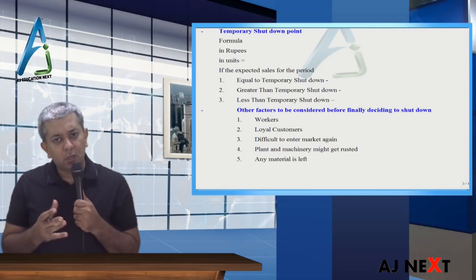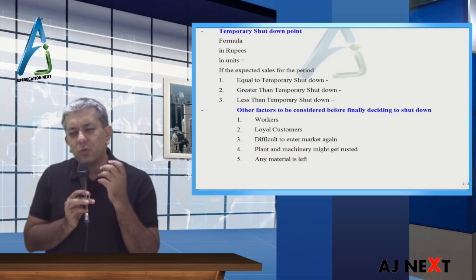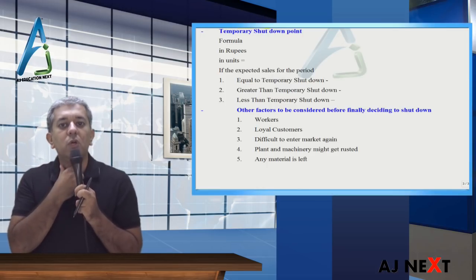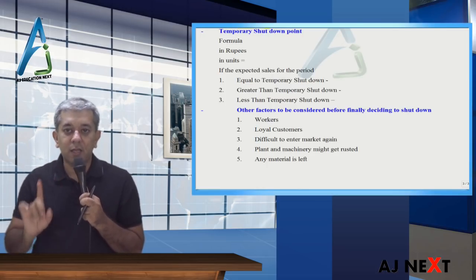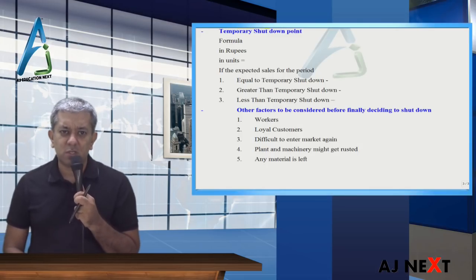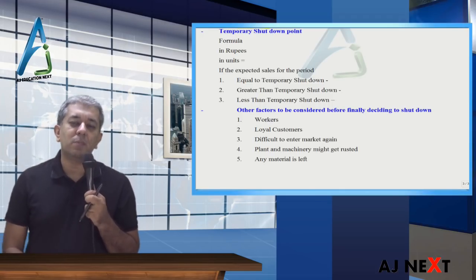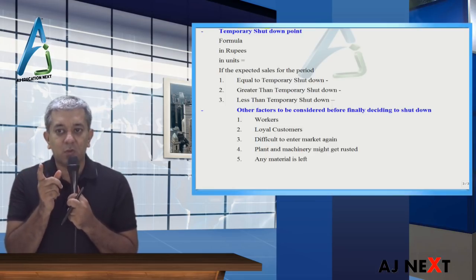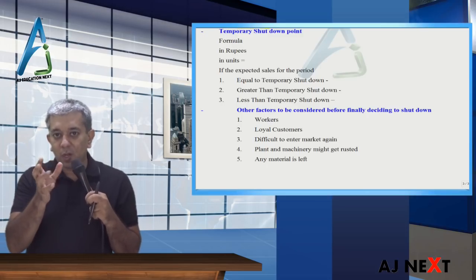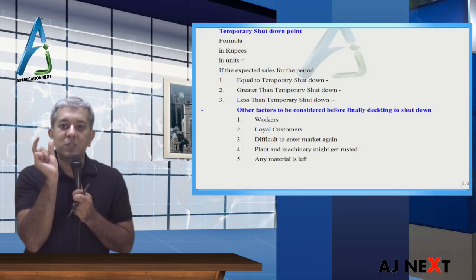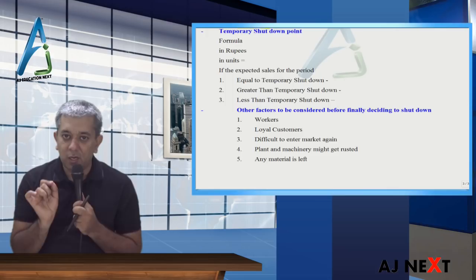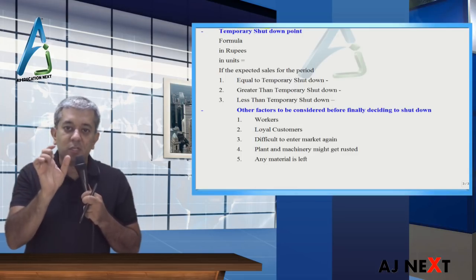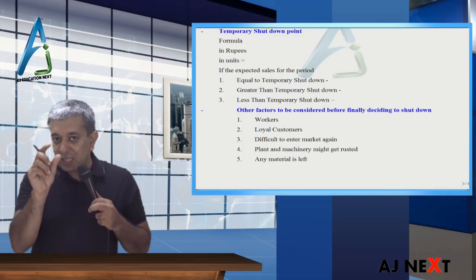Temporary shutdown point: sometimes businesses go through a bad period and consider shutting the factory temporarily. The question is: what is the minimum sales required so that it is better to continue instead of shutting down? That is called the temporary shutdown point. Note that if you shut down temporarily, your variable costs will stop, but fixed costs will continue — for example, rent still needs to be paid. Formula in rupees: extra fixed cost of continuation divided by PV ratio. In units: extra fixed cost of continuation divided by contribution per unit.